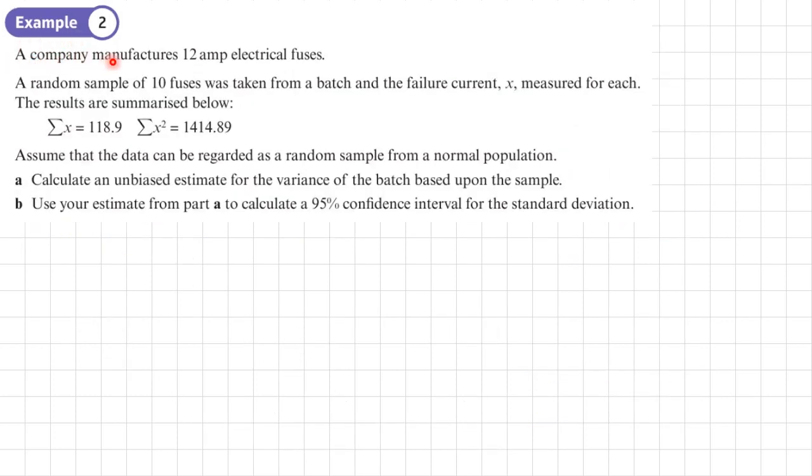Example 2. A company manufactures 12-amp electrical fuses. A random sample of 10 fuses was taken from a batch, and the failure current x, measured for each. The results are summarized as follows: sum of x is 118.9, sum of x squared is 1414.89, so n is 10. Assume that the data can be regarded as a random sample from a normal population, and in part A calculate an unbiased estimate for the variance of the batch based upon the sample.